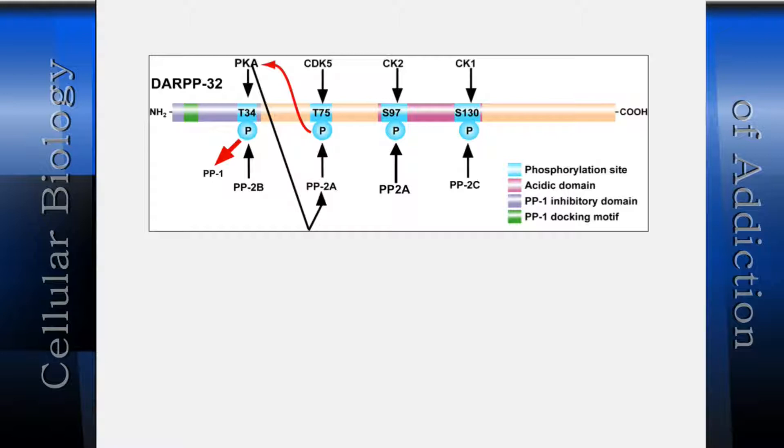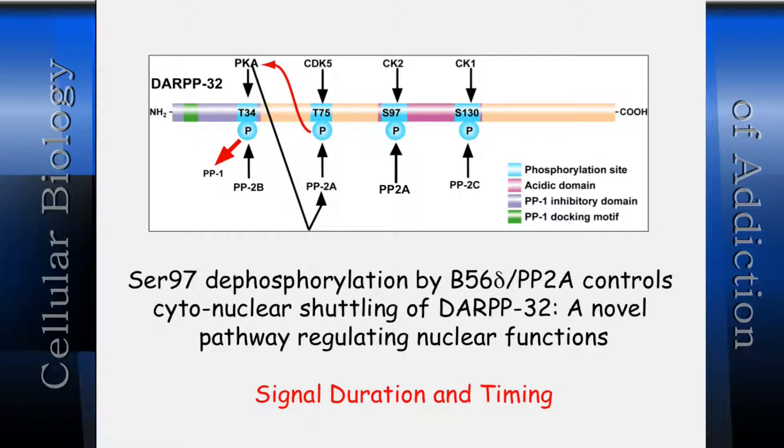The second part of the story relates to signal duration and timing. I'm going to talk about the phosphorylation event at serine-97 within DARPP-32, which is phosphorylated by a kinase called casein kinase 2 (CK2) — though the real casein kinase that phosphorylates casein in milk is a completely different entity. This involves changing the localization of DARPP-32, from the initial phases in the cytosol to later stages in the nucleus.